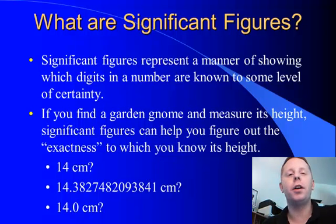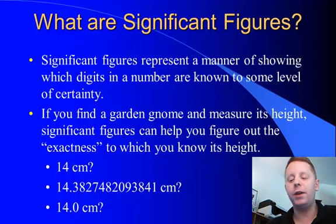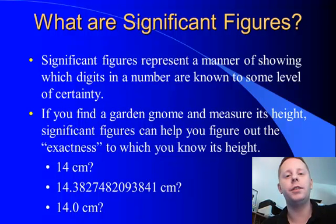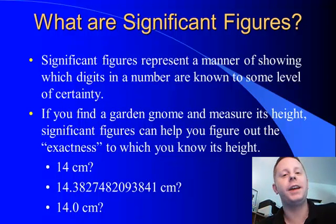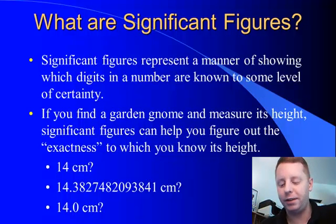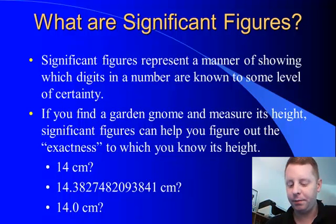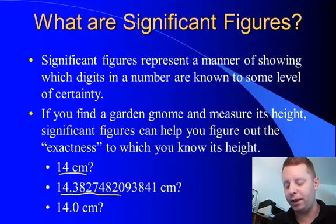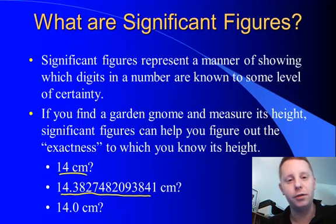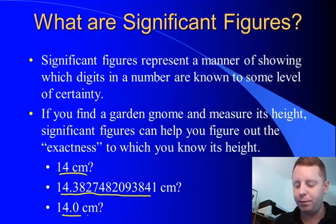So to begin with, what are sig figs? Well, it's a manner of showing which digits in a number are known to some level of certainty or exactness. For example, if you find a garden gnome and you measure its height, you could write down its height several different ways: 14 centimeters, 14.3827482 centimeters, or 14.0 centimeters.